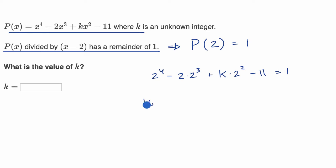Two to the fourth is 16, and then two times two to the third is two to the fourth again, so it's minus 16 plus four k minus 11 equals one. These cancel out. We can add 11 to both sides of this equation and we get four k equals 12. Divide both sides by four and we get k equals three. Let's do two more examples because we're having so much fun.